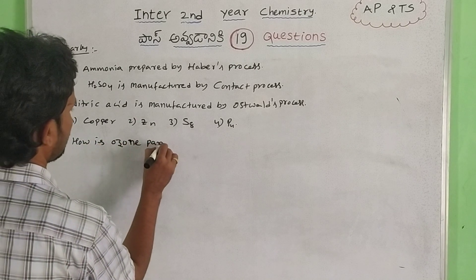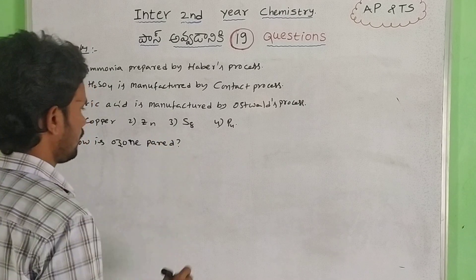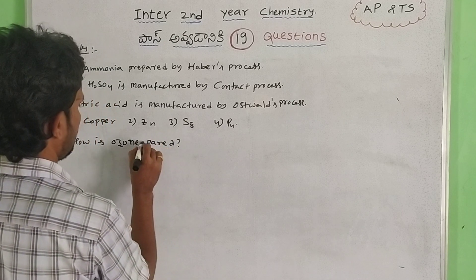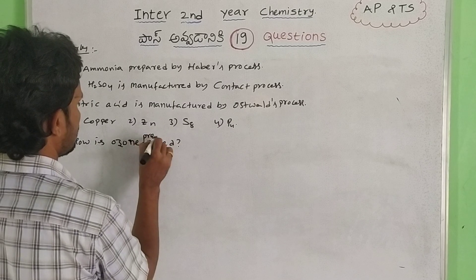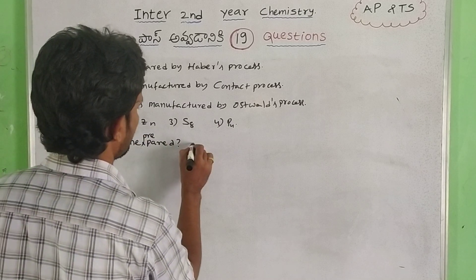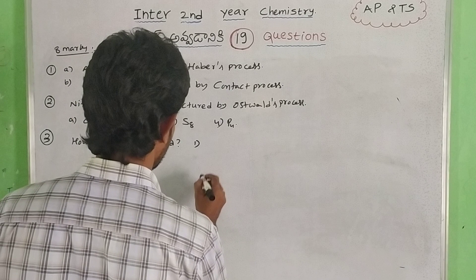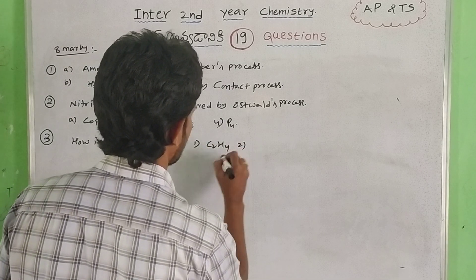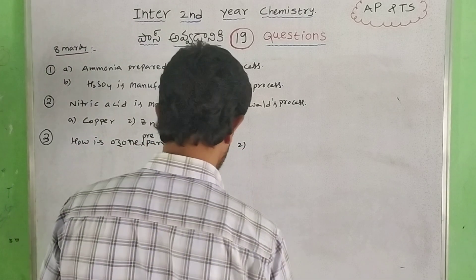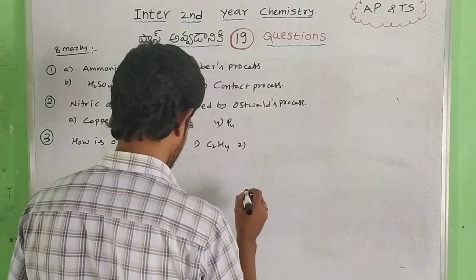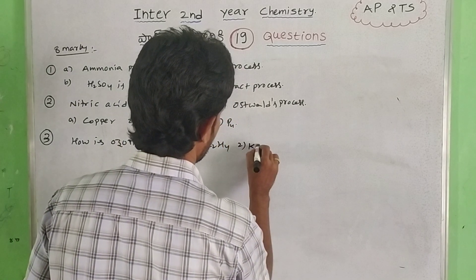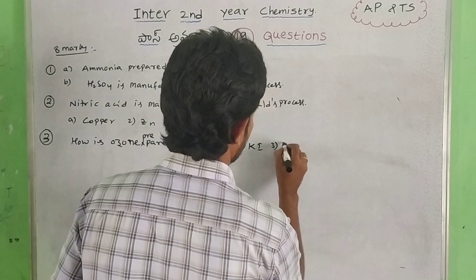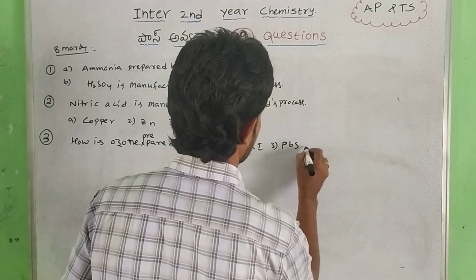Ozone preparation. Next one: ethylene. Then potassium iodide — third one. P, B, S — okay.